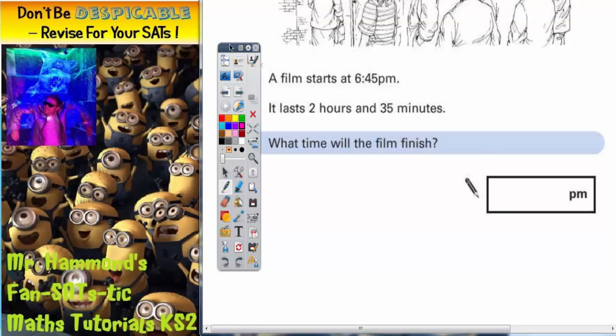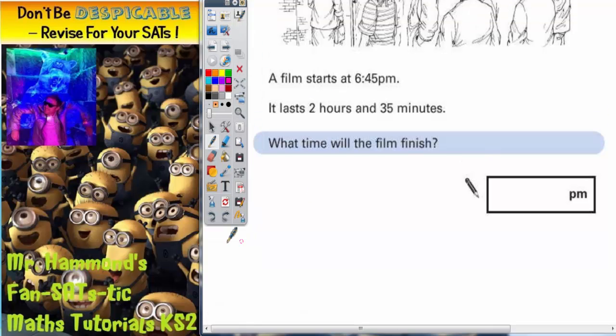So if the film is starting at 6:45pm then let's break it down into chunks. So let's first of all add on 2 hours, just put H for hours. So if you add on 2 hours that's going to take you to 8:45pm.